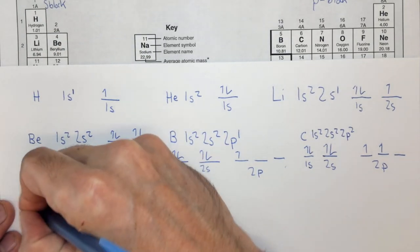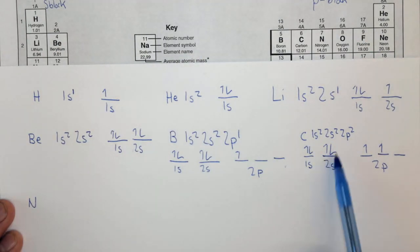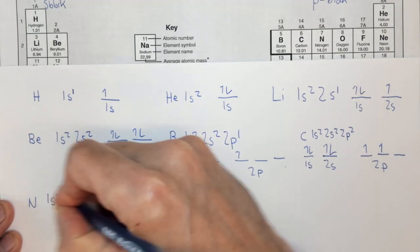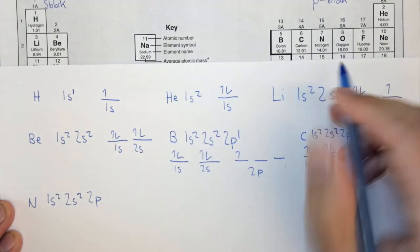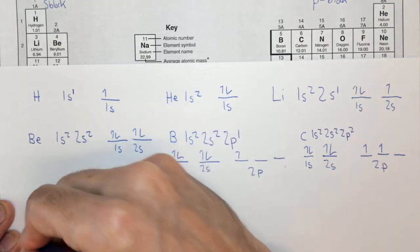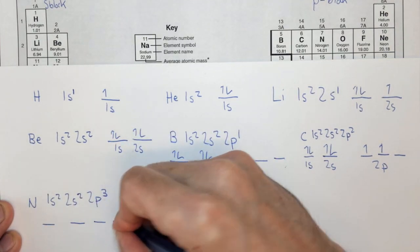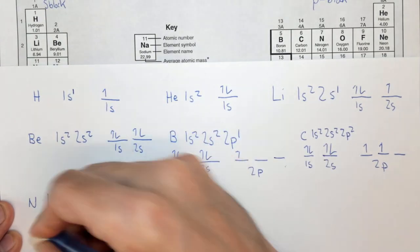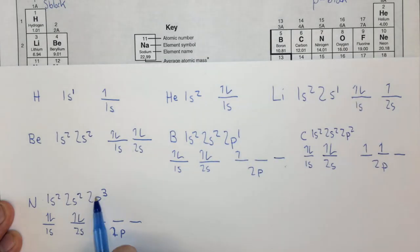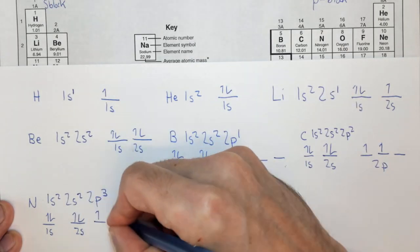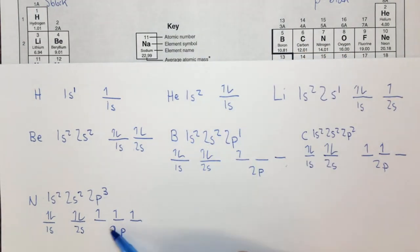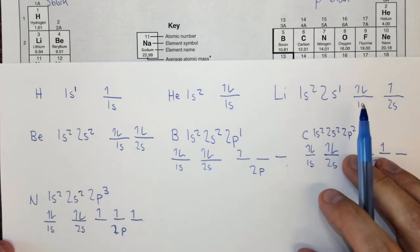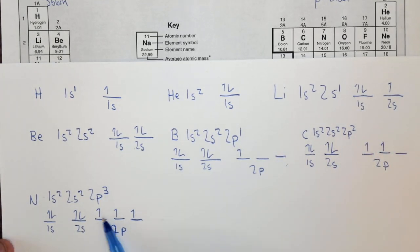Nitrogen is carbon plus one more, and there's still space in the 2p orbital: 1s² 2s² 2p³. In the box diagram: 1s full, 2s full, and 2p gets three electrons placed up, up, up. We do not pair electrons until all orbitals have one — electrons like to have the same spin first.